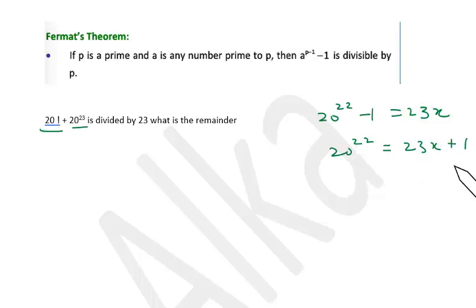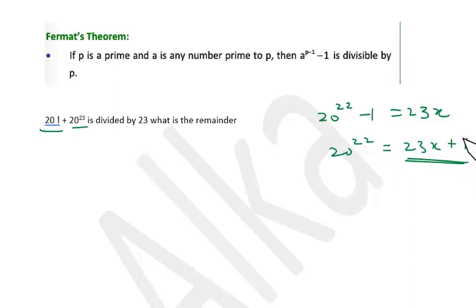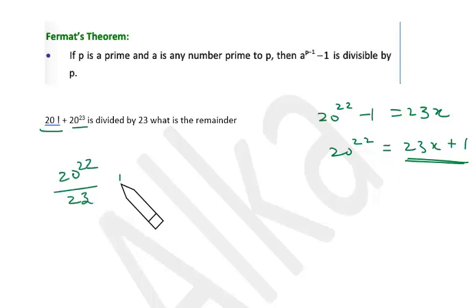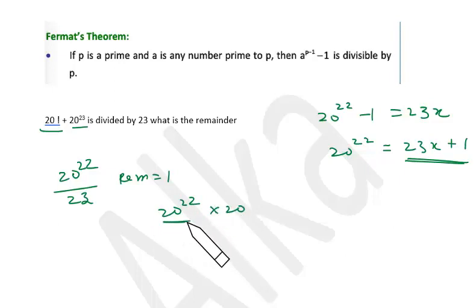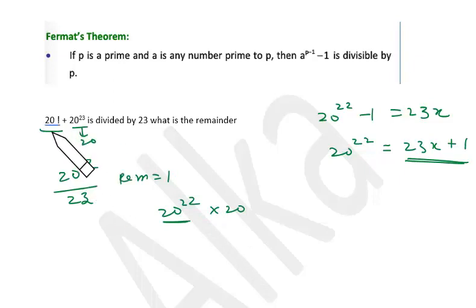When 20 raised to 22 is divided by 23, the remainder is 1. But we have 20 raised to 23, not 22. We can write 20 raised to 23 as 20 raised to 22 times 20. The remainder is 1, and we still have a factor of 20, so the final remainder for this part is 1 into 20, which is 20. Now we need to apply Wilson's theorem to find the remainder for 20 factorial, then add both remainders.